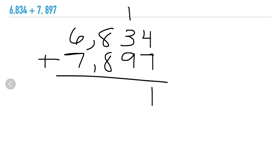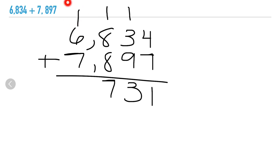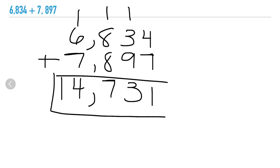What did you get when you added 1 plus 3 plus 9? Thirteen — 3 stays on the floor, 1 goes next door. And in your hundreds place, when you added 1 plus 8 plus 8? Seventeen — 7 stays on the floor, 1 goes next door. And lastly, our thousands place: 1 plus 6 plus 7 — that's 14. Make sure you don't forget those commas!